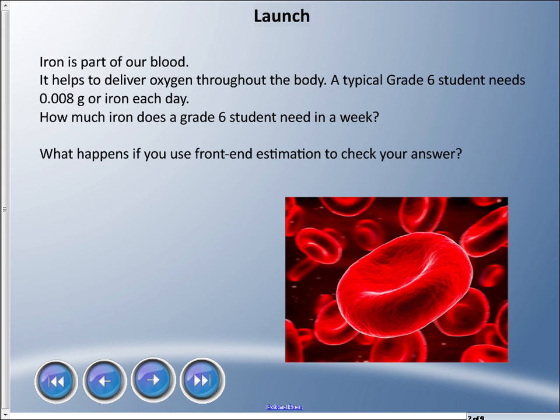What happens if you use front-end estimation to check your answer? We learned that we could use front-end estimation previously in the previous two lessons to do this, but we have a problem here because it's 0, but the answer is not going to be 0, so we're going to find out how to move on with that.